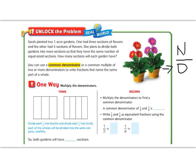Let's begin by reading the unlock the problem. Sarah planted two one-acre gardens. One had three sections of flowers and the other had four sections of flowers. She plans to divide both gardens into more sections so that they have the same number of equal-sized sections. How many sections will each garden have? We can use a common denominator — a common multiple of two or more denominators — to write fractions that have the same part of a whole. One way to do this is to multiply the denominators.